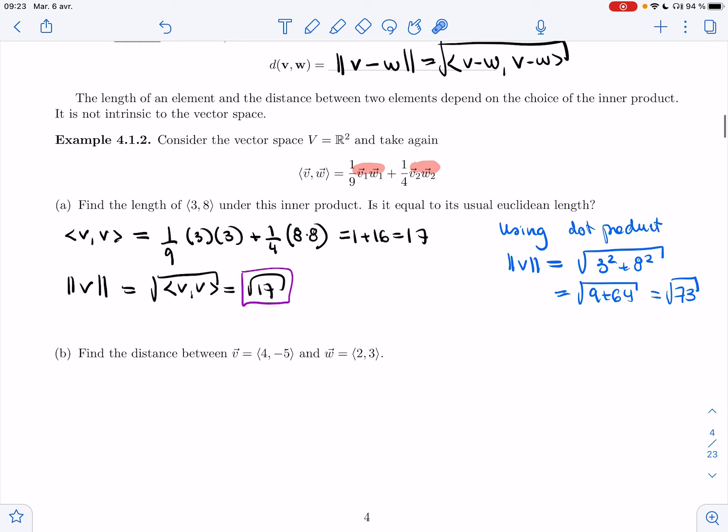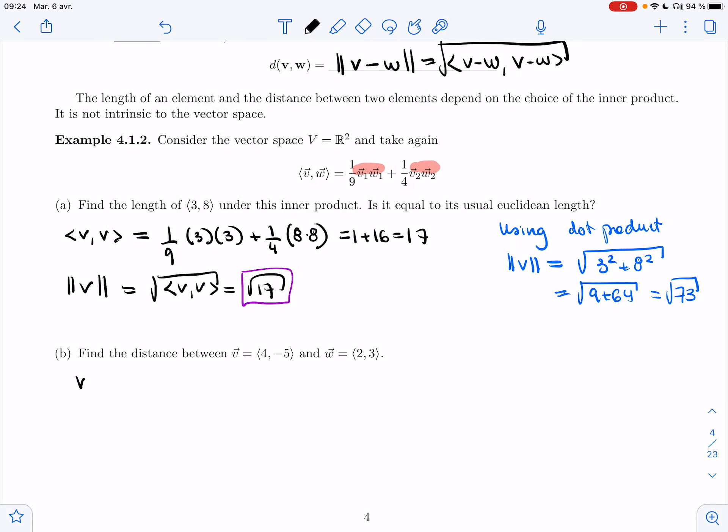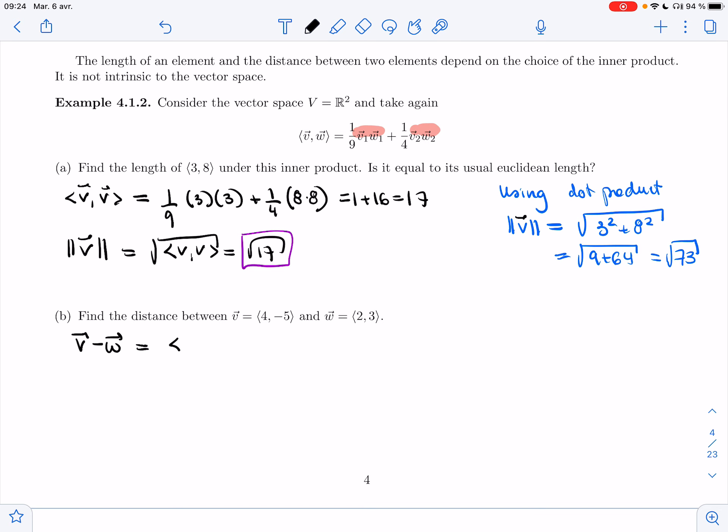Let's try another computation. Find the distance between v and w. So I need to compute v minus w. Sorry, in this case, they are vectors. So v minus w, that's 2 minus 8.